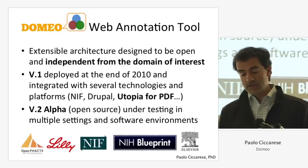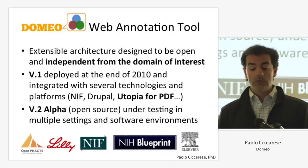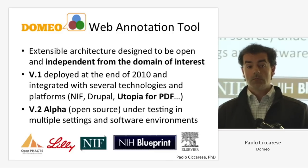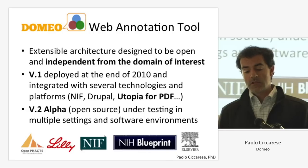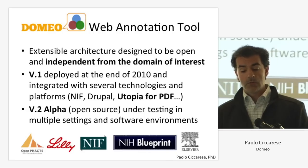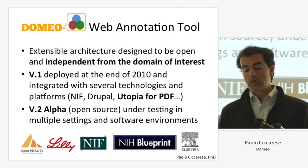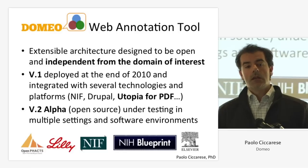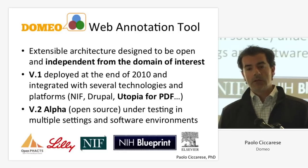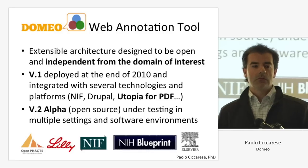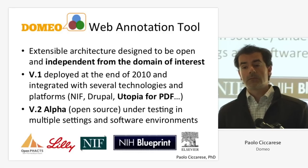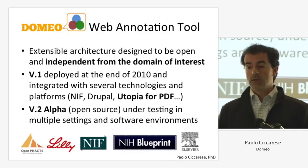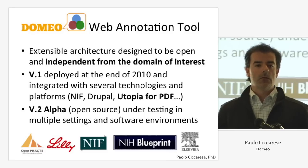The tool was deployed initially in 2010 and has been used by several groups. In particular, I want to mention NIF — the Neuroscience Information Framework — a big NIH-funded project for collecting resources in neuroscience. When they have to create annotations, they jump into our tool, get back the annotation through APIs, and some of that annotation gets published into PubMed. The idea of DOMEO is to be open and allow all this communication.